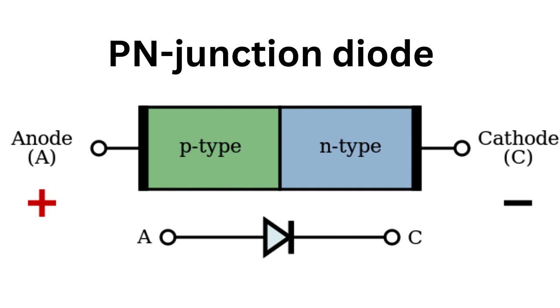P-N junction diodes are widely used in electronic circuits, such as rectifiers, voltage regulators, and signal processing. It is also used as a light detector and a switch.